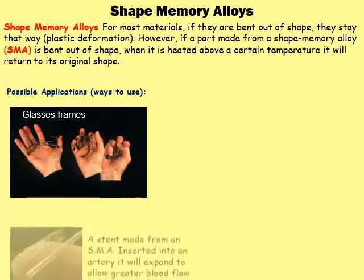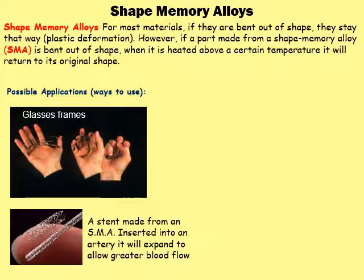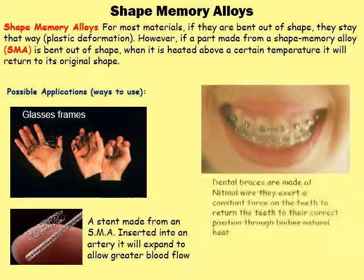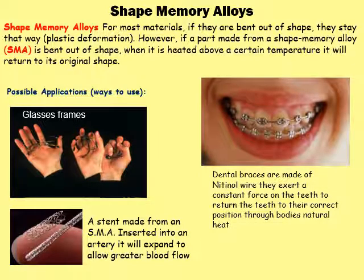The next application is used in operations where arteries need to be made bigger. Surgeons feed metal frames into arteries that need to be widened, and the body's natural temperature makes the wire frame expand inside the body, making the artery bigger — quite a useful thing when you need to widen arteries. And the next application is dental braces — they're really common, made from nitinol, and exert a constant force on the teeth to bend them back into the memorized shape of the wire over time.